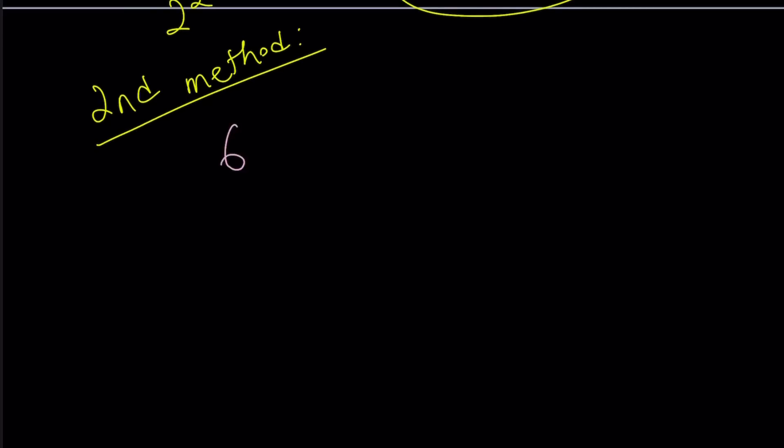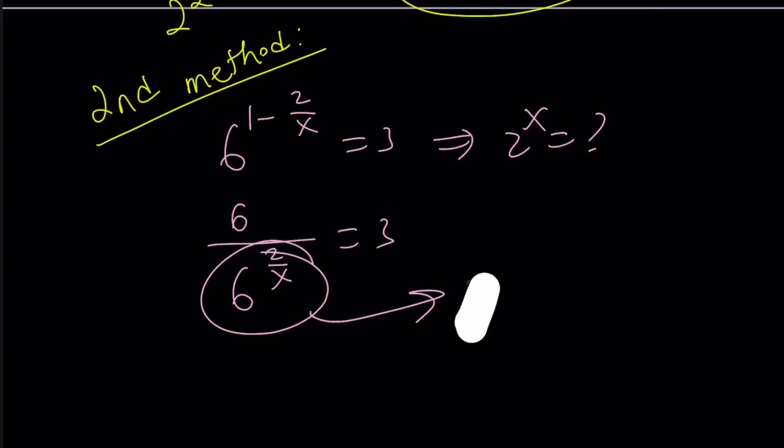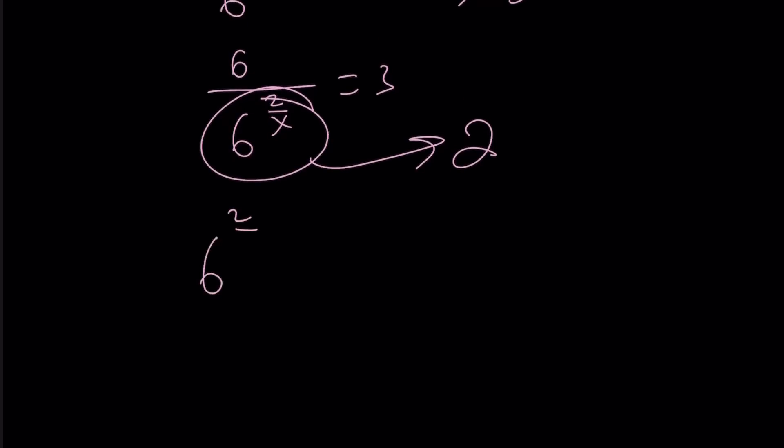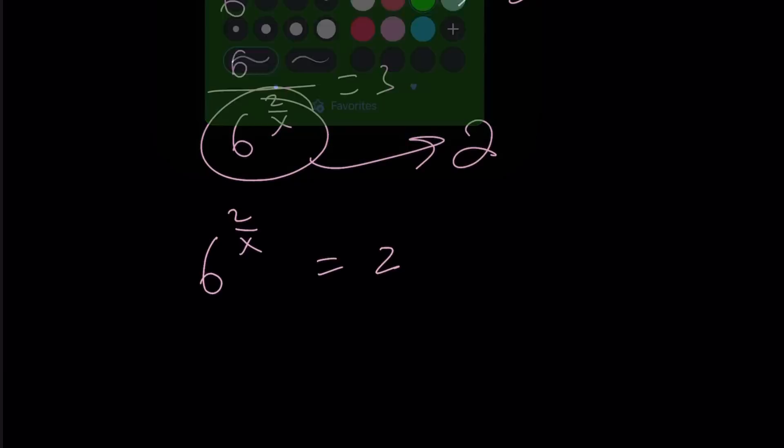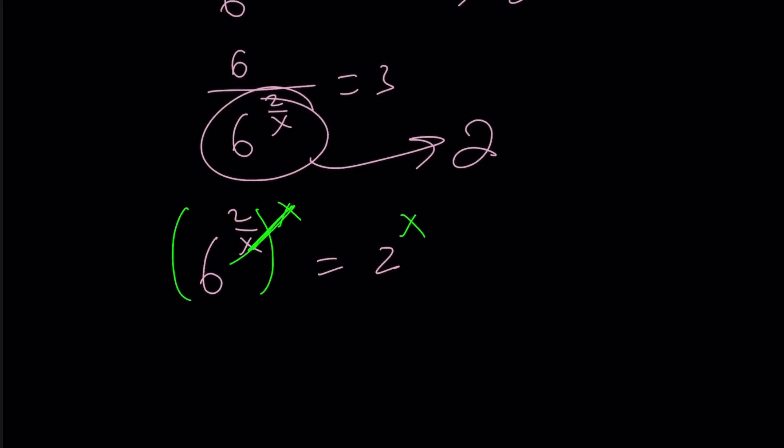We have 6 to the power 1 minus 2 over x equals 3, and I'm supposed to find 2 to the x. Ready, set, go. I'm going to go ahead and write this as 6 to the power 1 over 6 to the power 2 over x equals 3. 6 divided by what number equals 3? The answer is 2. And then from here we get 6 to the power 2 over x equals 2. And then now is the time to raise both sides to the power x, and that's going to give us 36 equals 2 to the power x.